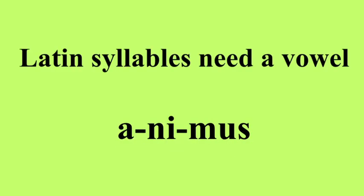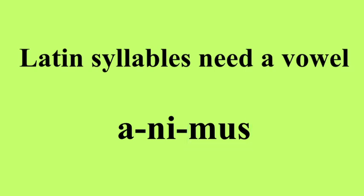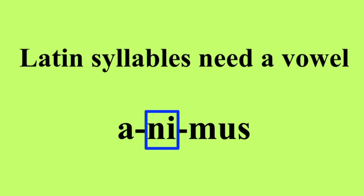Latin syllables are defined by the presence of a vowel sound. You can't have a syllable without a vowel sound, and two vowel sounds are two syllables. Consonants are just additions to the syllable. You can think of vowels as peanut butter and any consonants as the slices of bread. Sometimes you have a peanut butter sandwich with one slice of bread on either end, sometimes it's an open-faced sandwich with just one consonant, and other times you just have the peanut butter right out of the jar.